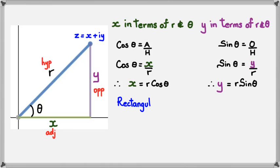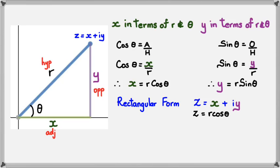Continuing from the rectangular form Z equals x plus iy, we now replace everything in terms of R and theta — that's what polar form is. So x becomes R cos theta, and y becomes R sine theta, giving us R cos theta plus i times R sine theta. Since R is a common factor, we take it out to get R times (cos theta plus i sine theta).